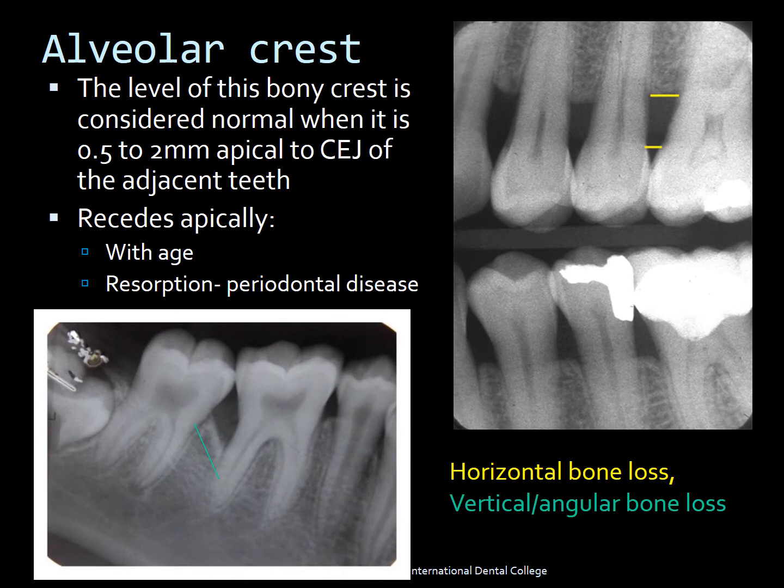Recession or receding of the alveolar crest generally happens with age and also when there is resorption in the case of periodontal disease. The molar radiograph here indicates vertical or angular bone loss — when the bone is lost at an angle, this is called vertical or angular bone loss. These radiographs help you differentiate between horizontal bone loss and vertical bone loss.